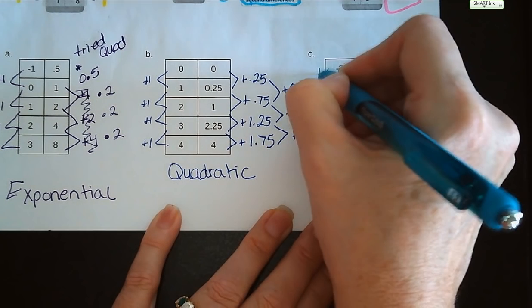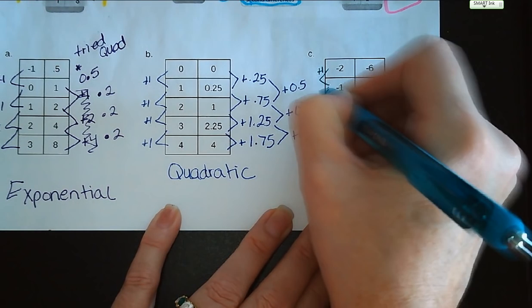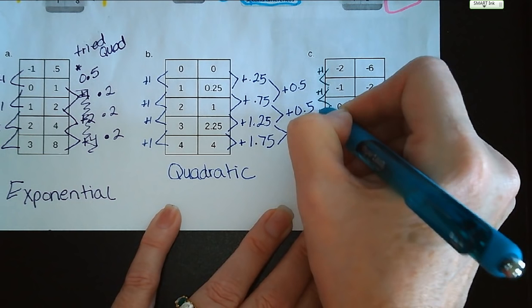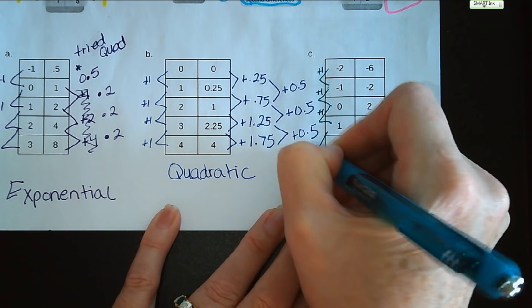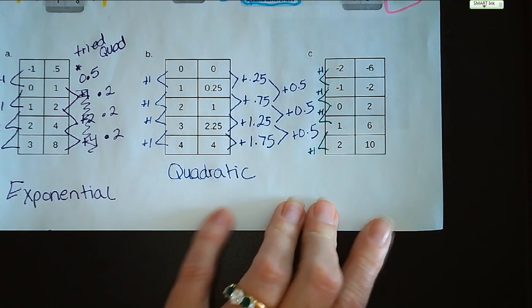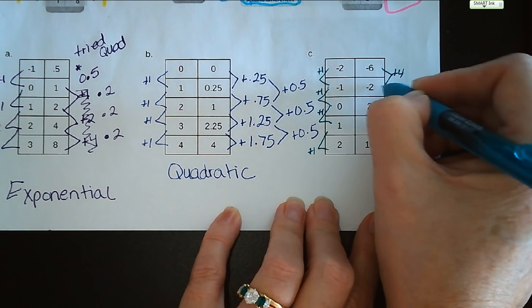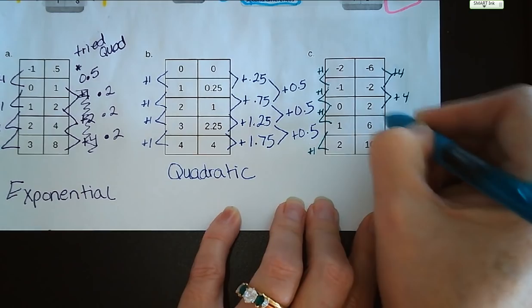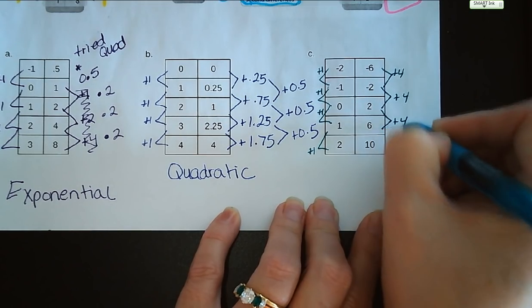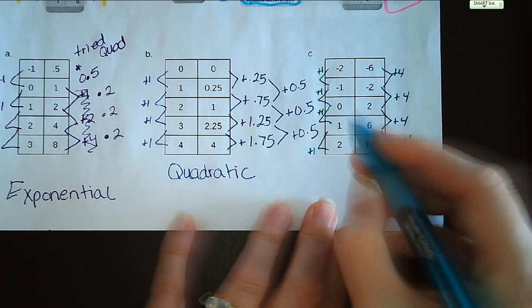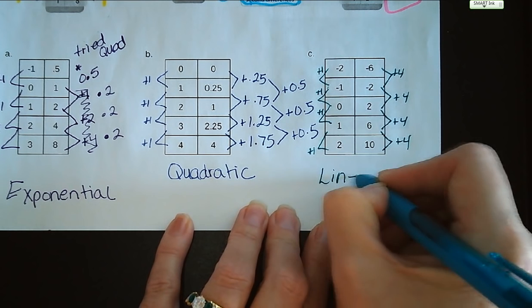Letter C, again, we're adding 1 every time to our X values. Let's see what's happening with Y values. We're adding 4, adding 4, adding 4, and adding 4. So that's going to be linear.